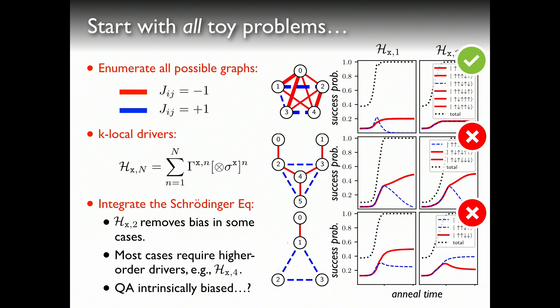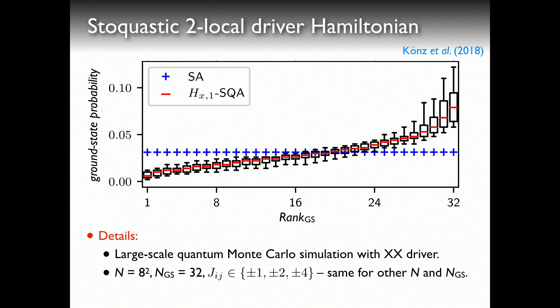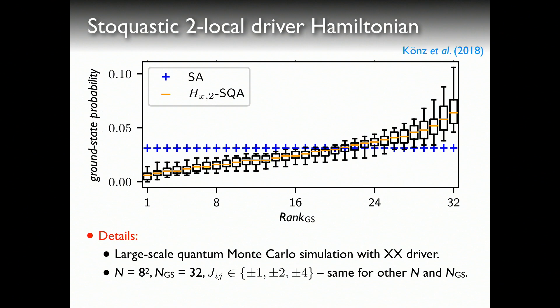This is actually bad news because at some point we would like to build a device with two-local drivers to do more interesting things, and this means quantum annealing is intrinsically biased. As Mario showed, we also studied large-scale simulations — here is a system of size eight-squared spins with 32 ground states. With a transverse field driver, the data are biased. Simulated annealing, however, shown as blue crosses, gives a nice flat line meaning you find all states. When you turn on a two-local driver, the bias persists.